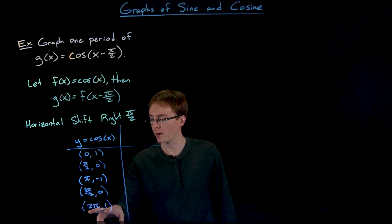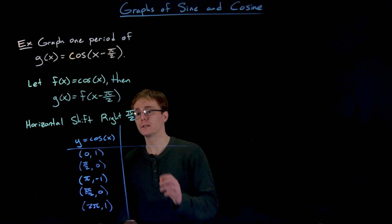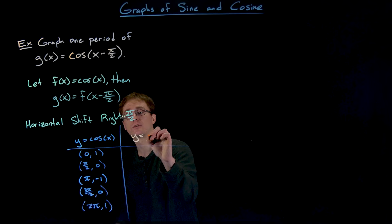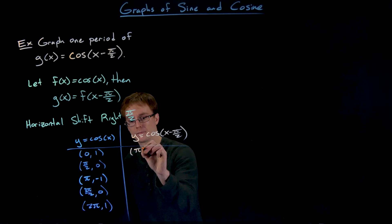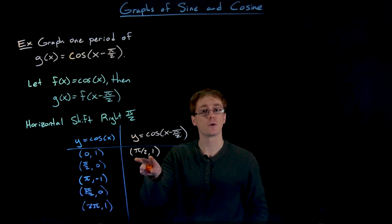Now we want to transform these points and have them correspond to points on our new function f(x - π/2) or cosine of x minus π over 2. What we have to do is add π over 2 to each of these x coordinates. So our first point that was at (0, 1) is going to get shifted to the right π over 2 units and now end up at the point (π/2, 1).